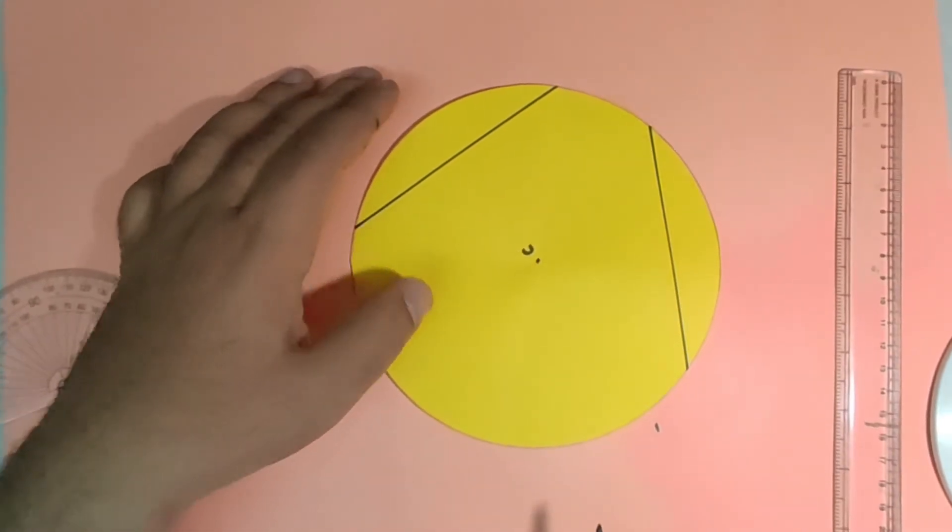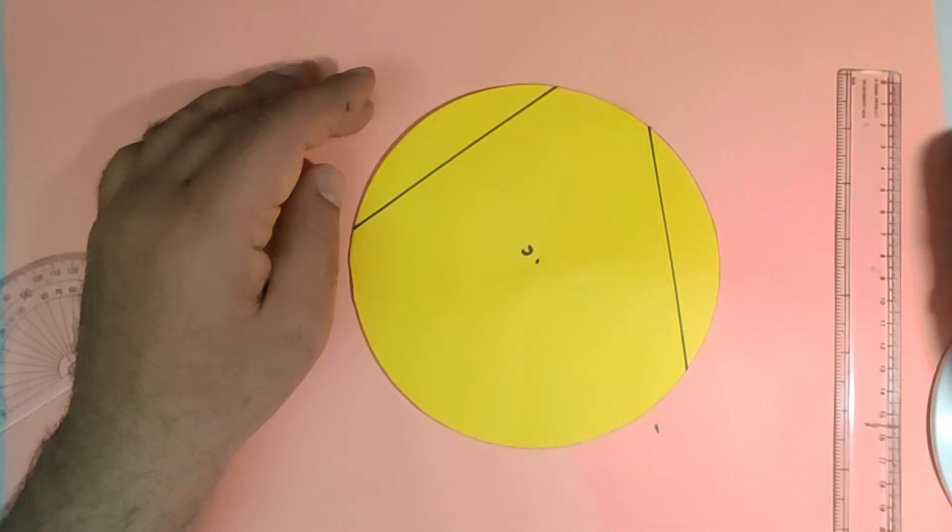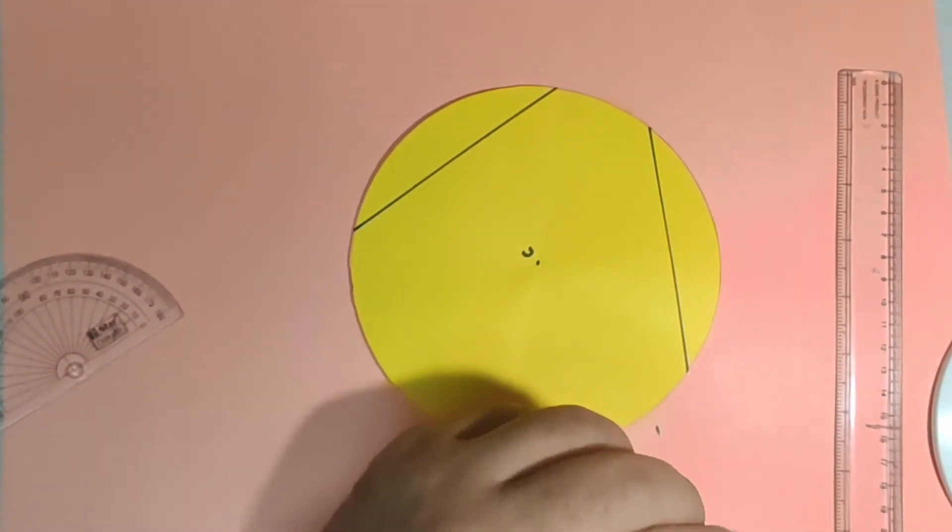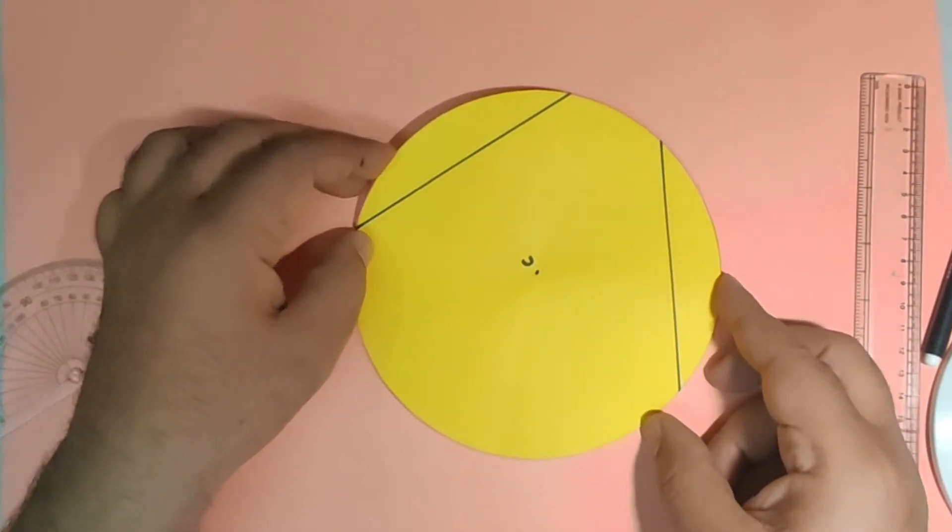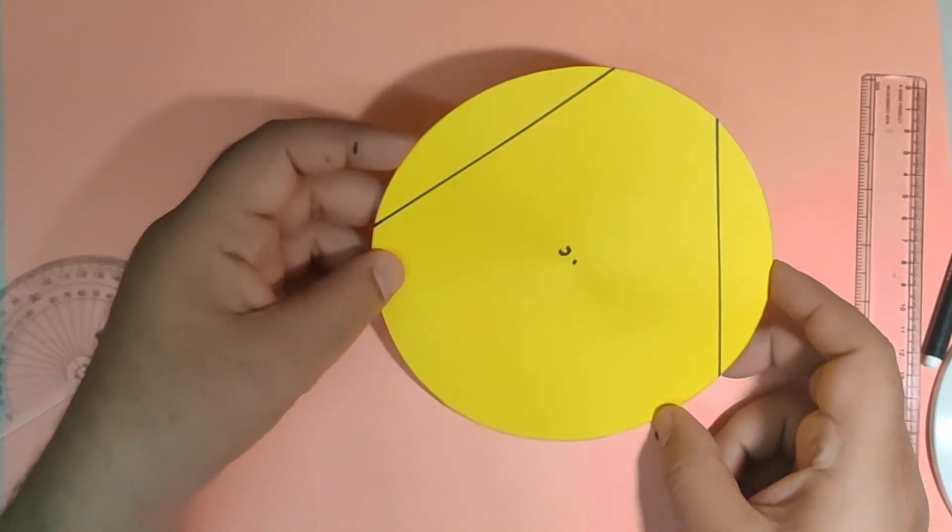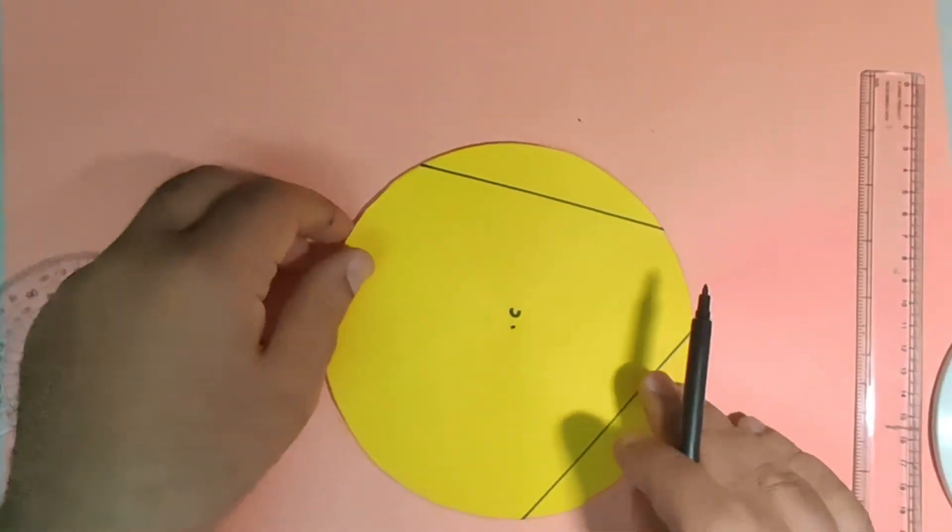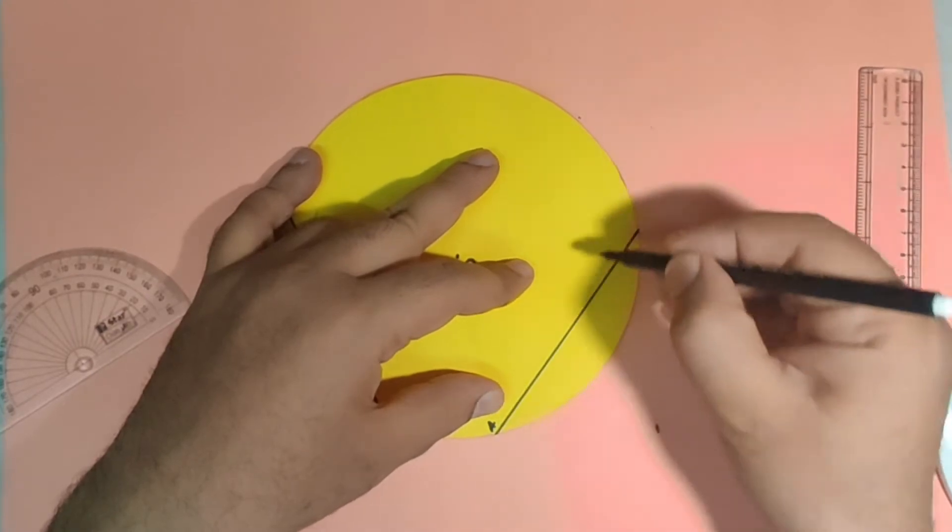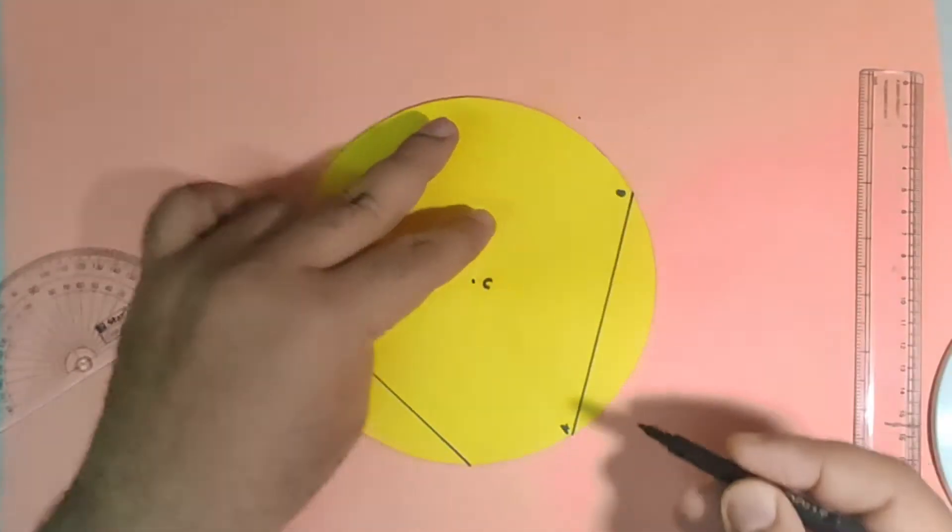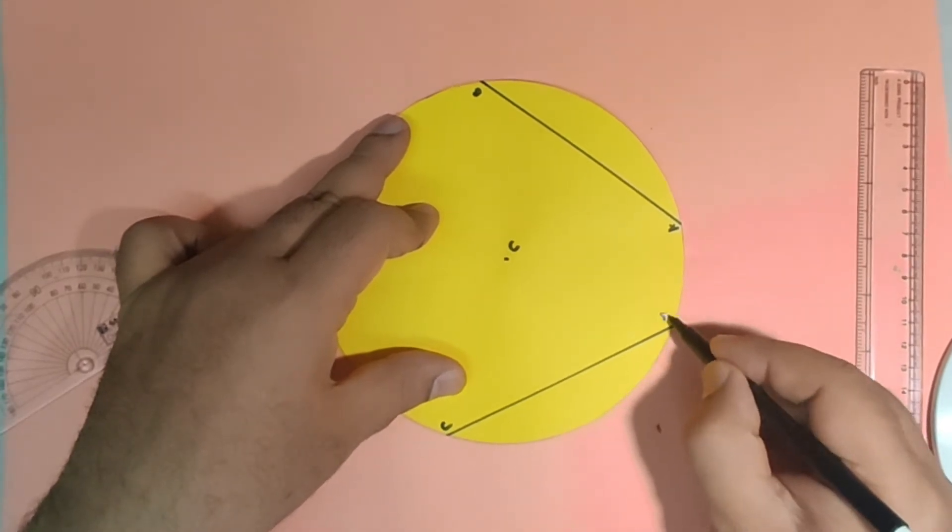Now using paper folding activity I will subtend to angle at the center and measure what is the measure of those two angles subtended by these two equal chords. I have taken these two equal chords as 11 centimeter length. Let us say this as AB and this as CD, so both are 11 centimeter.